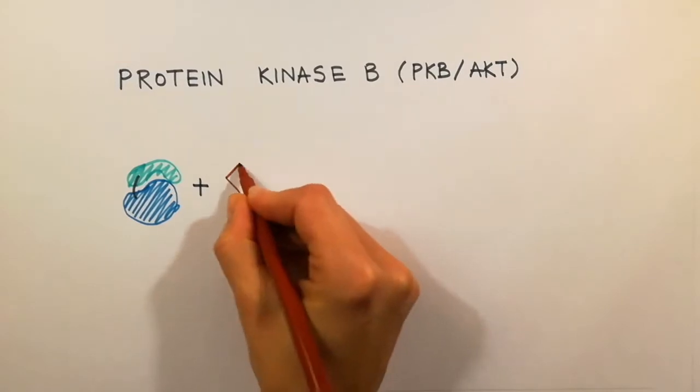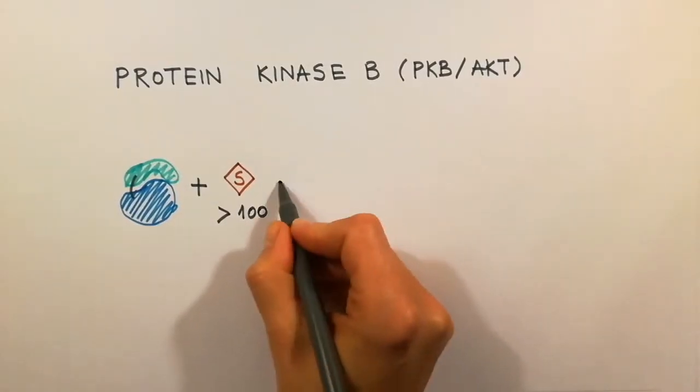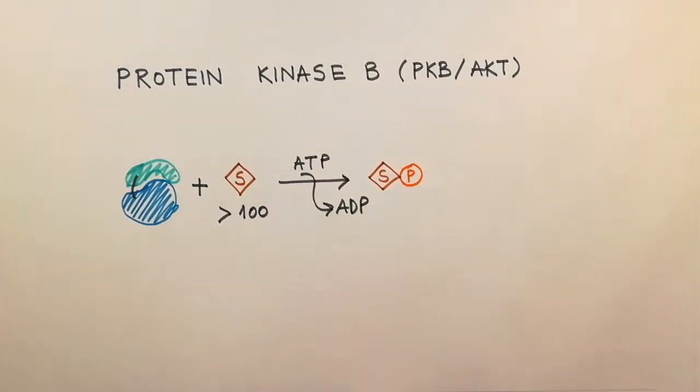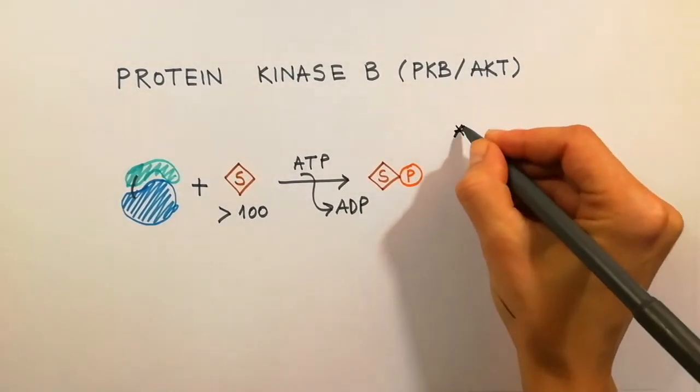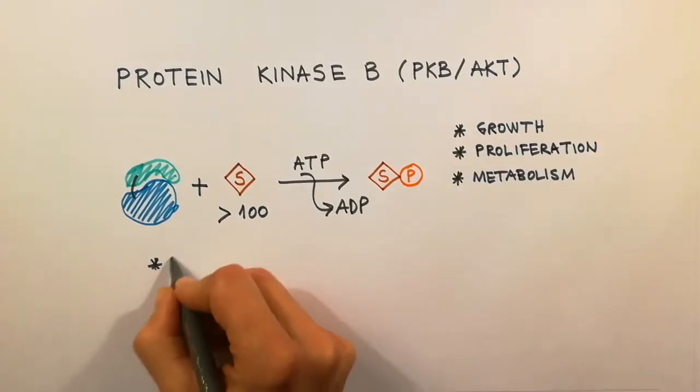Protein kinase B, also known as AKT, modifies over 100 proteins in the cell by phosphorylation and thereby controls important cellular processes such as growth, proliferation, and metabolism.